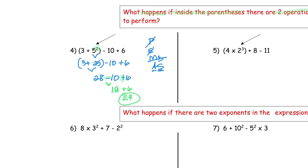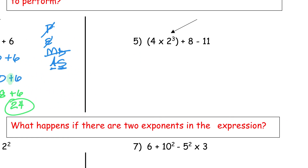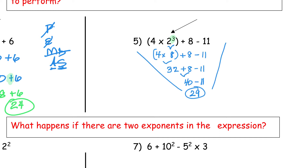Good job. Try number five on your own — that one's a little tougher. Be careful because now we have an exponent on the inside and it's a three. Pause the video and give it a shot. The final answer to number five is 29.